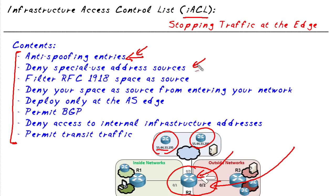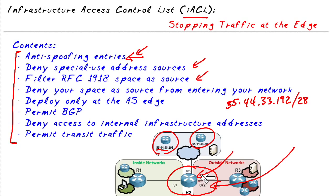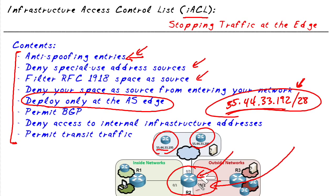We want to deny any special-use addresses. For example, the all-zeros address — it's not a good idea to let a packet in when the source address is all zeros, or 127.x.x.x. On the live internet, we also wouldn't expect packets claiming to be from the 10.x.x.x, 172.16.x.x, or any private address space. We want to block those at the edge. If we've been given a block like 55.44.33.192/28, we want to deny packets claiming to come from that address space at the edge only — internally, we may actually be routing and using it as a source address.